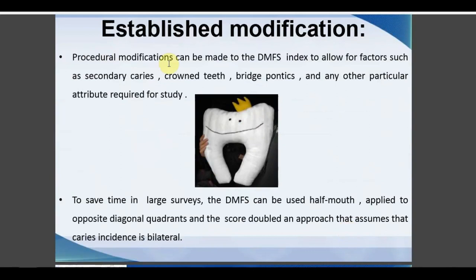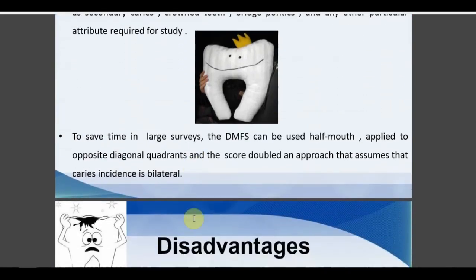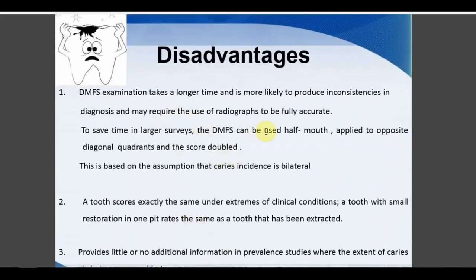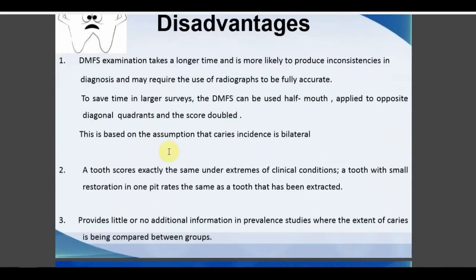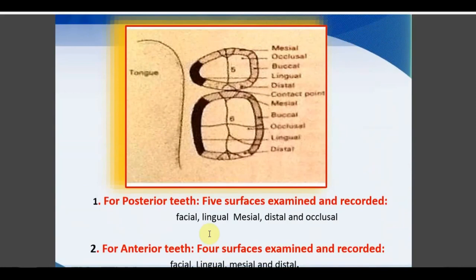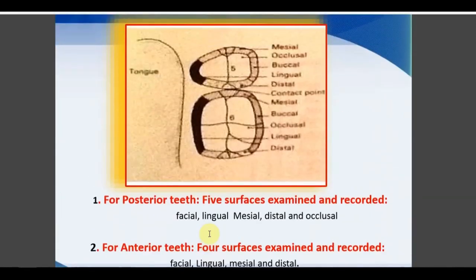Modifications of DMFS can accommodate crown teeth, bridge pontics, or any particular requirements of a study. DMFS can be applied to half-mouth examinations for time management, though this can produce inconsistent diagnosis in some situations. Disadvantage: tooth scores can appear exactly the same under extreme clinical conditions. Advantage: more sensitive — the same tooth can be recorded in multiple surface categories if it has both caries and fillings on different surfaces. Color coding used: black for caries, blue for filling, and red for missing.